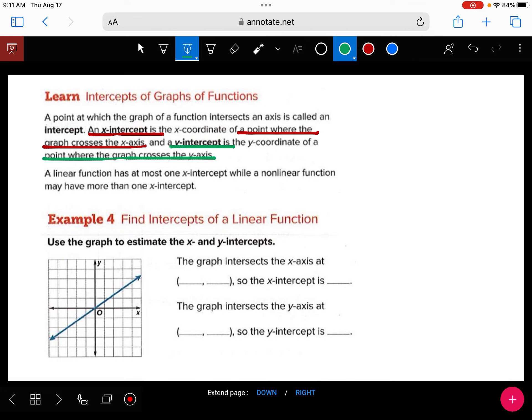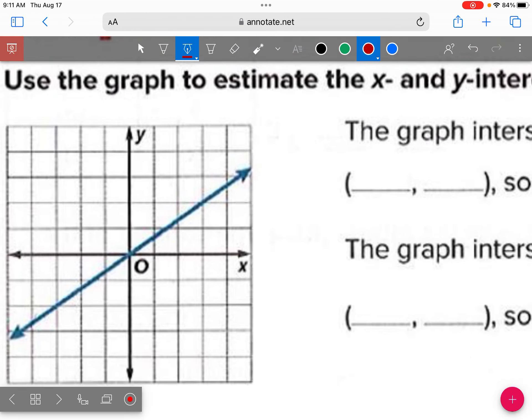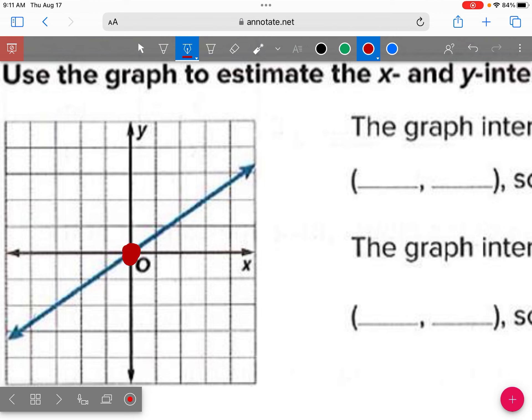So we're going to do our best to estimate our intercepts looking at this graph. Some of the graphs are a little easier to look at. It's not as clear, but for this first one, it's only one intercept. Let me zoom in. This is the only intercept right here. And what do we call that point? The origin. Good.